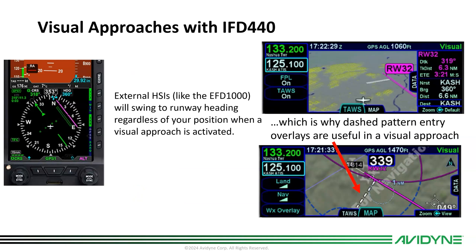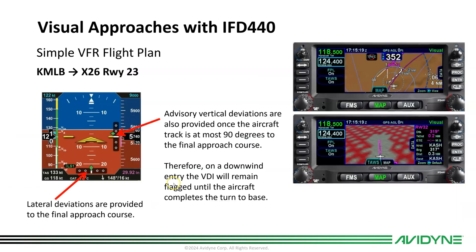If you have the unit connected to an external HSI like an Aspen, it will swing to the runway heading regardless of your position when a visual approach is activated — it treats it like an ILS. Your D-bar will show where to fly, but you'll want to manually fly the dashed line for the base leg to intercept. Lateral deviations are provided to the final approach course, and advisory vertical deviations are also provided once the aircraft track is within ninety degrees of the final approach course. On downwind entry, the VDI will remain flagged until the aircraft completes the turn to base.